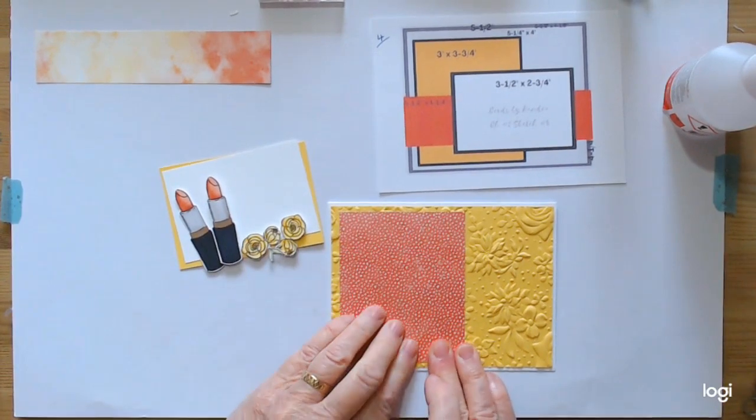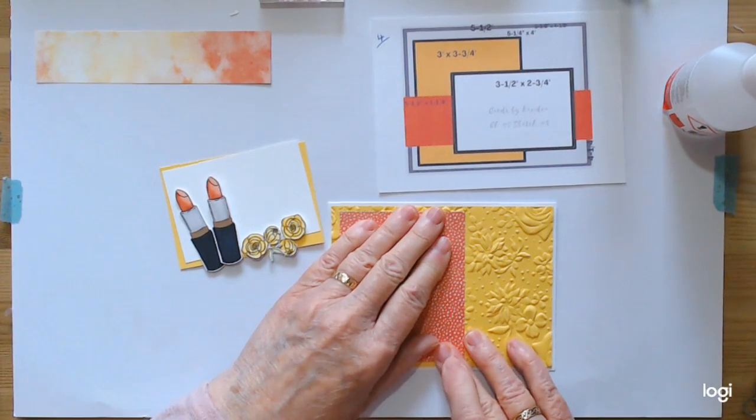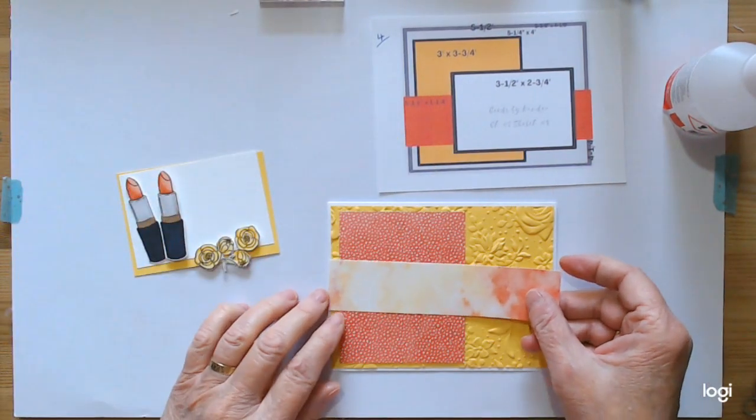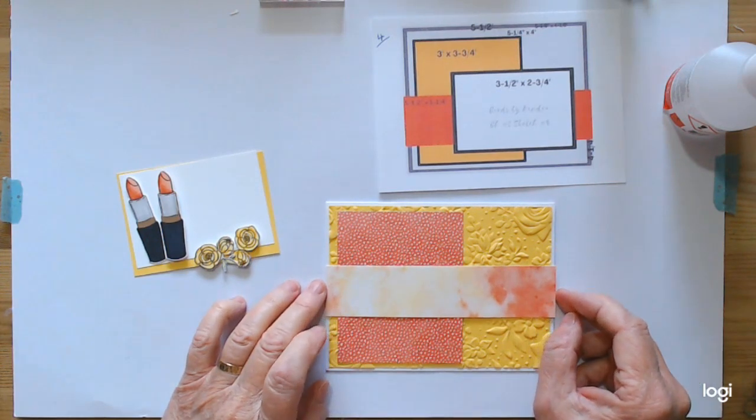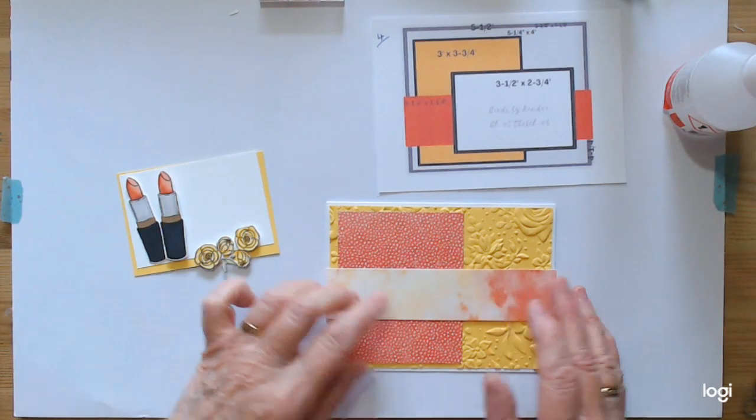Nice and bright and sunny. Just needs a tick. So the next part is your band across there which goes from one side of the card to the other, and I thought it would bring in the yellows on this side and the oranges on this side.